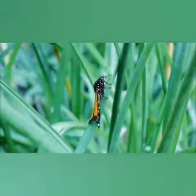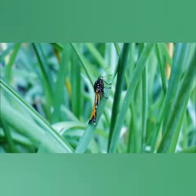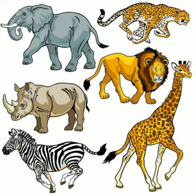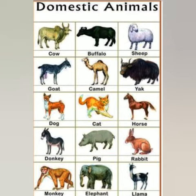There are different kinds of animals. Animals that live in the forest are called wild animals. Some of them are elephant, tiger, giraffe, etc. Domestic animals are those that live in or around our houses, for example dog, rabbit, hen, cat, etc.